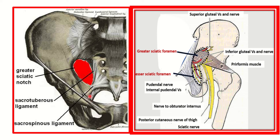From the back we can also see the lesser sciatic foramen. Both the greater and lesser sciatic foramina are located in the hip bone.